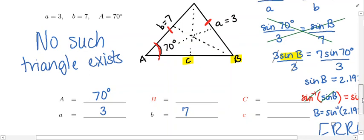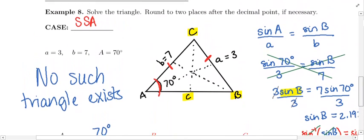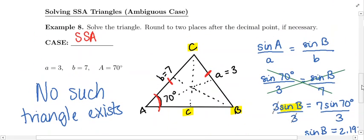With this configuration, if you've got an angle of 70 degrees, the side across from it measures three units, and then you know one of the other sides to be seven units, that can't happen.